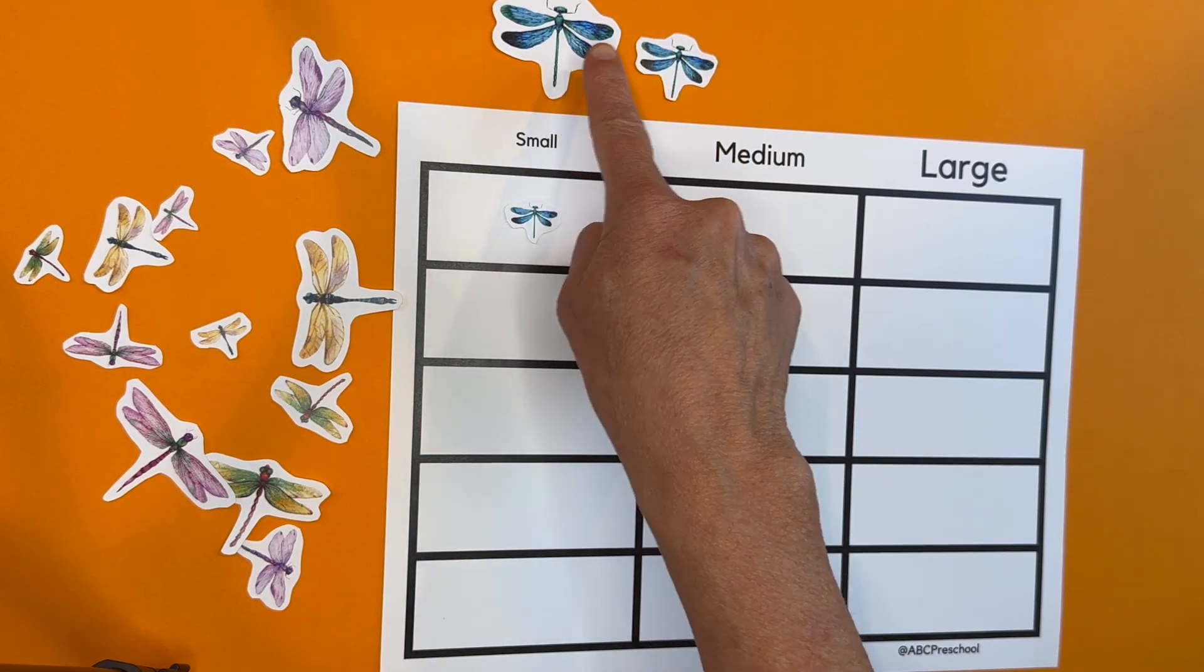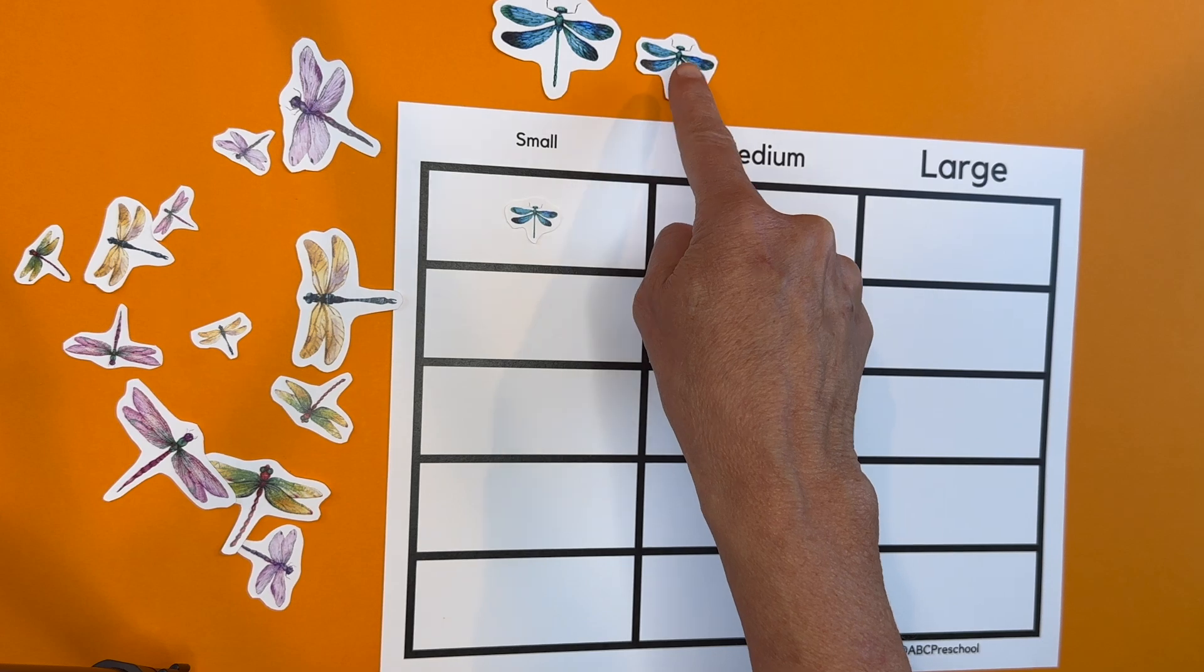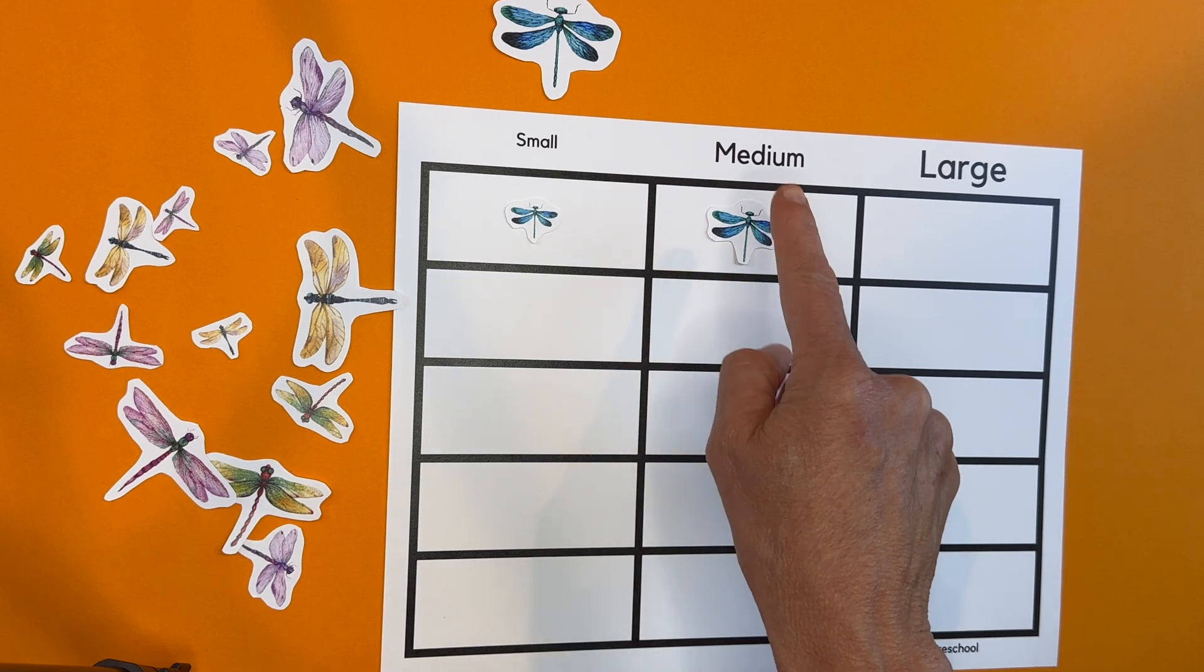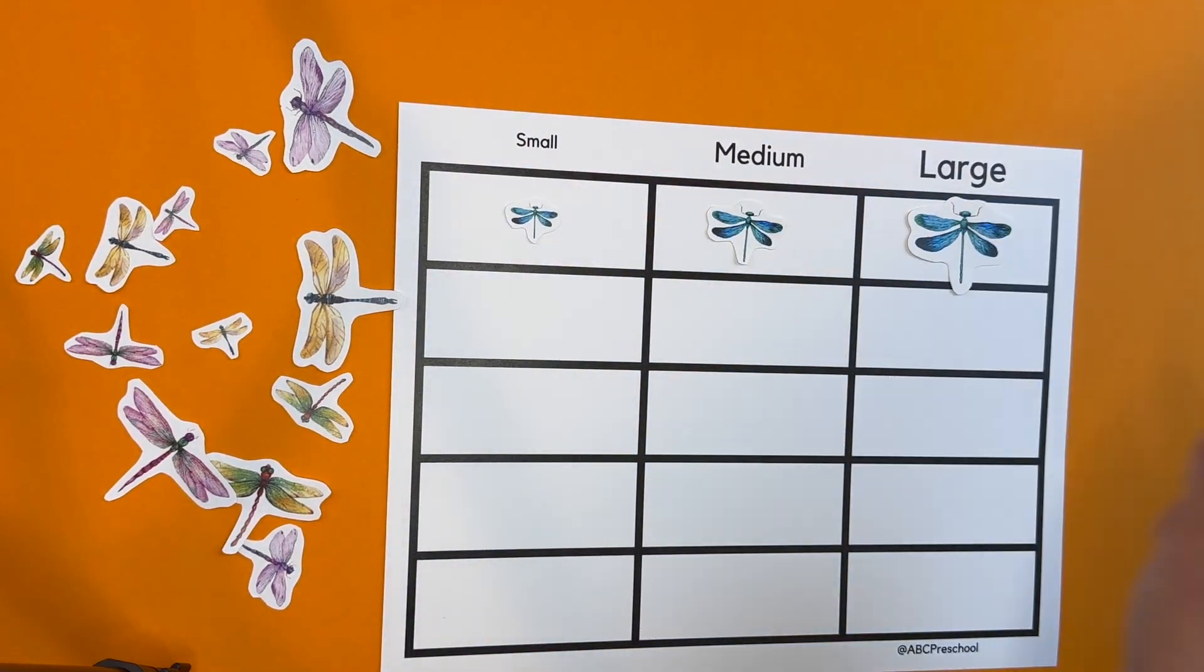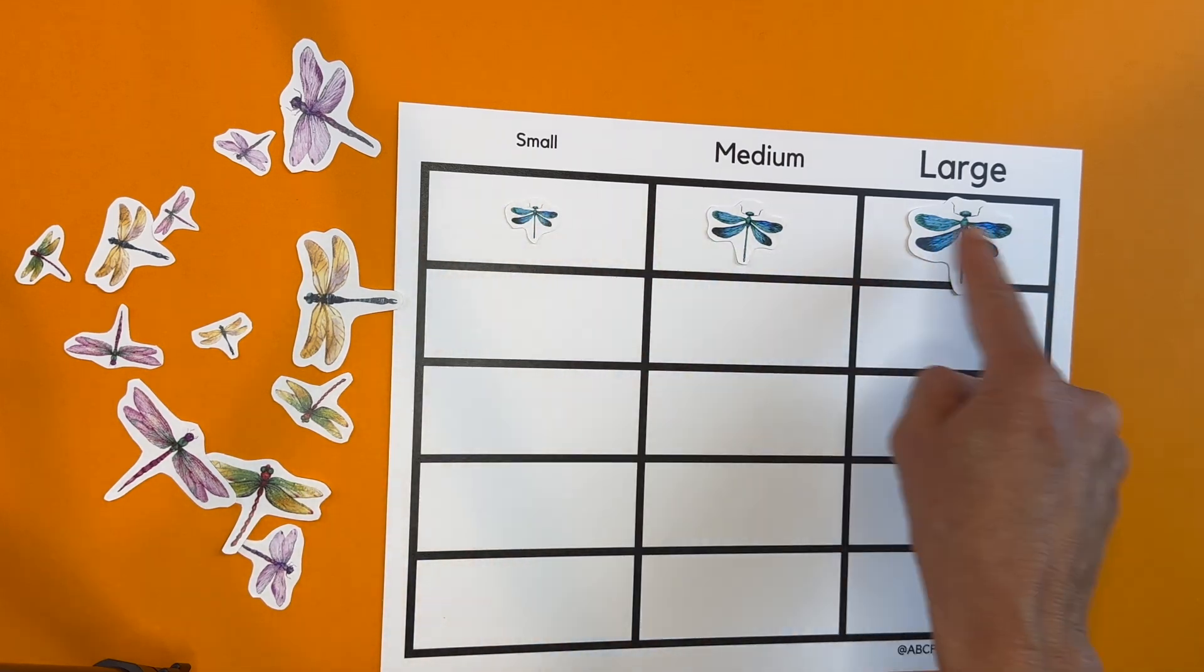Okay, which one is the medium size, the middle size? Right there. The medium size, small, medium, and that must mean this one's the large one. All right, we did it. We have the blue dragonfly family all lined up there.